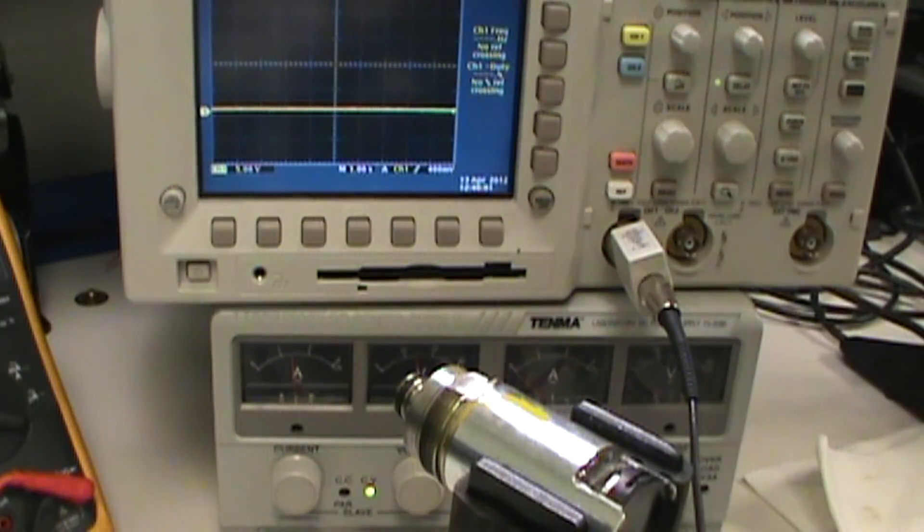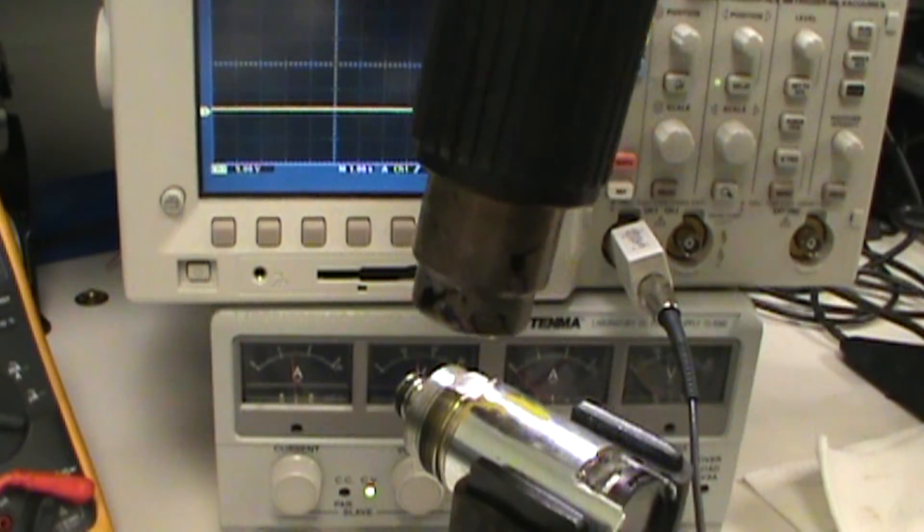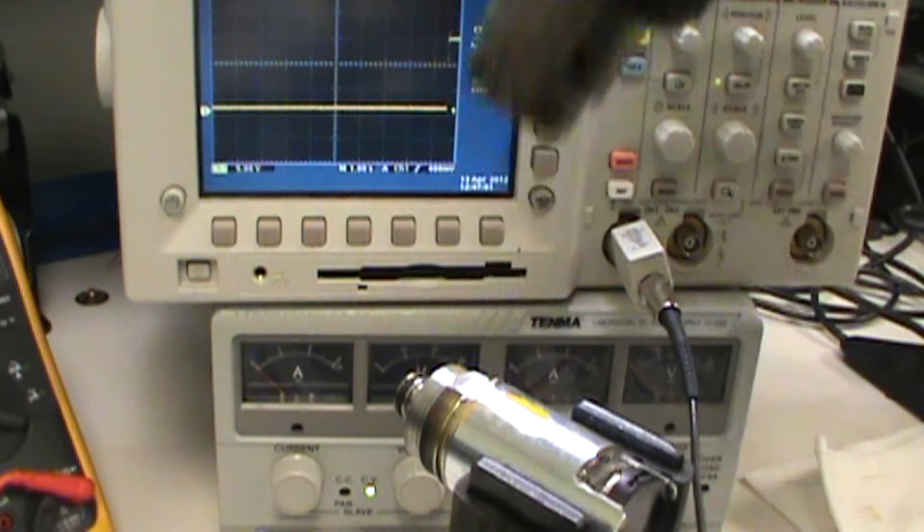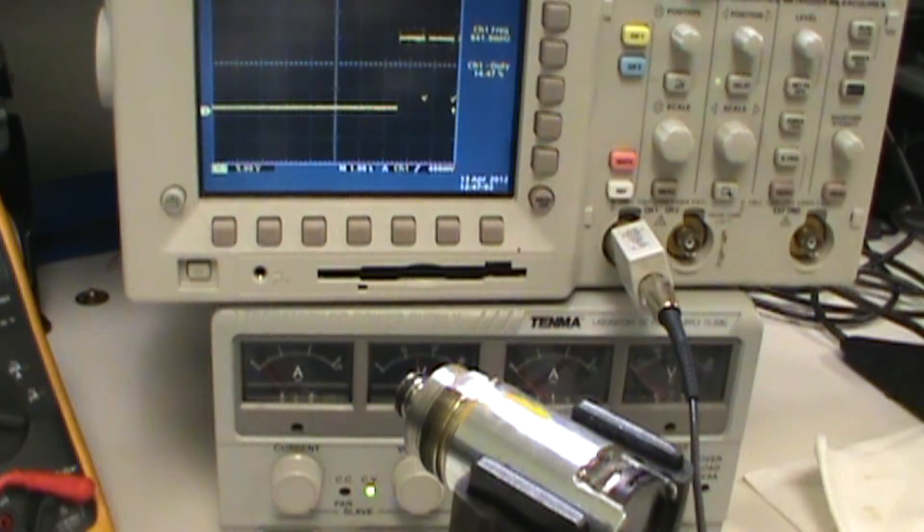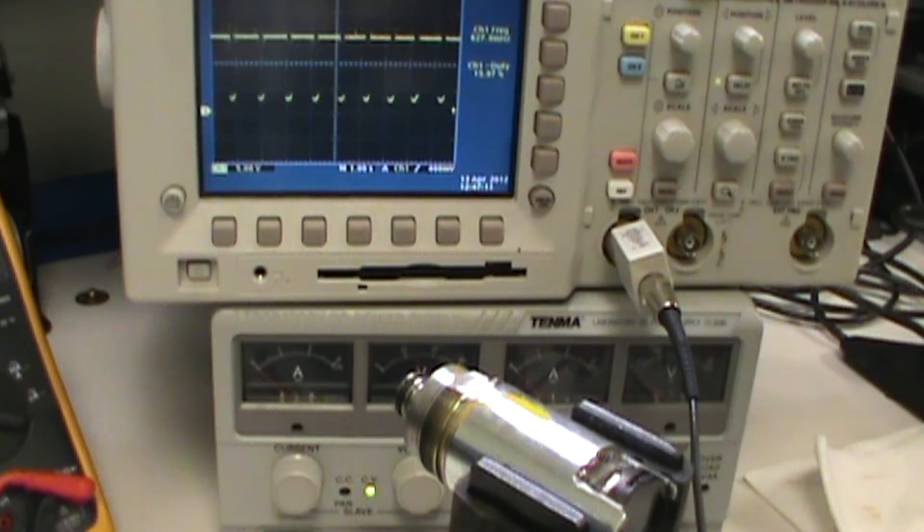Once again, watch the scope and the amp meter. We're pulling a little over an amp on this resistor that I've chosen. So here we go. Heat her up. Current's dropping out. As you can see, it's cycling just like it did with the built-in solenoid.